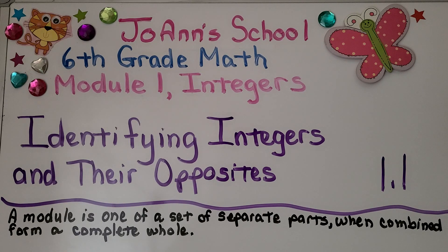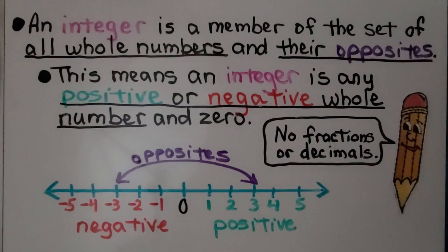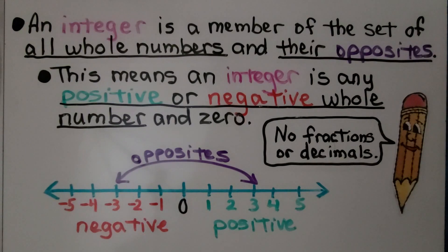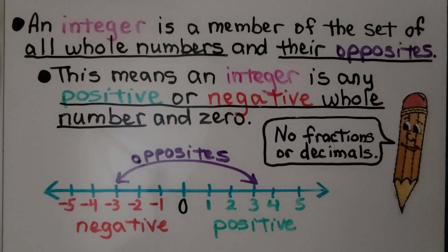This is 1.1: identifying integers and their opposites. An integer is a member of the set of all whole numbers and their opposites. This means an integer is any positive or negative whole number and zero. There are no fractions or decimals allowed — it's only whole numbers.